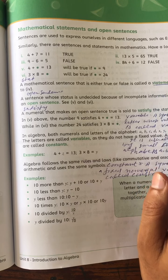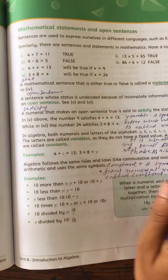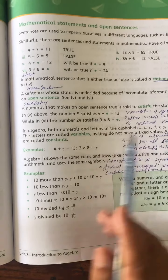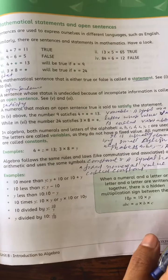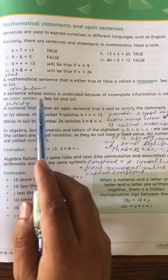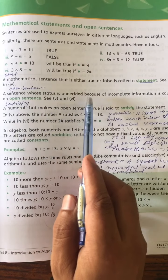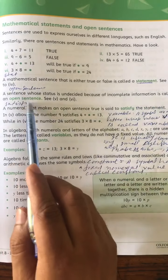What is open sentence? A sentence whose status is undecided because of incomplete information is called an open sentence.